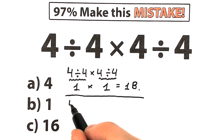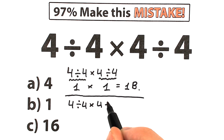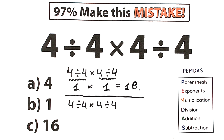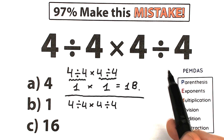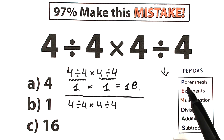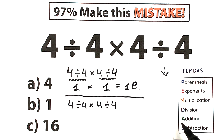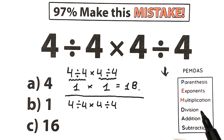Let's rewrite the question: 4 divided by 4 times 4 divided by 4. We'll use the PMDMC order of operations, which is the most popular order in the world. PMDMC works from the top to the bottom: first evaluate expressions inside parentheses, then exponents, then the multiplication and division group, and finally the addition and subtraction group.